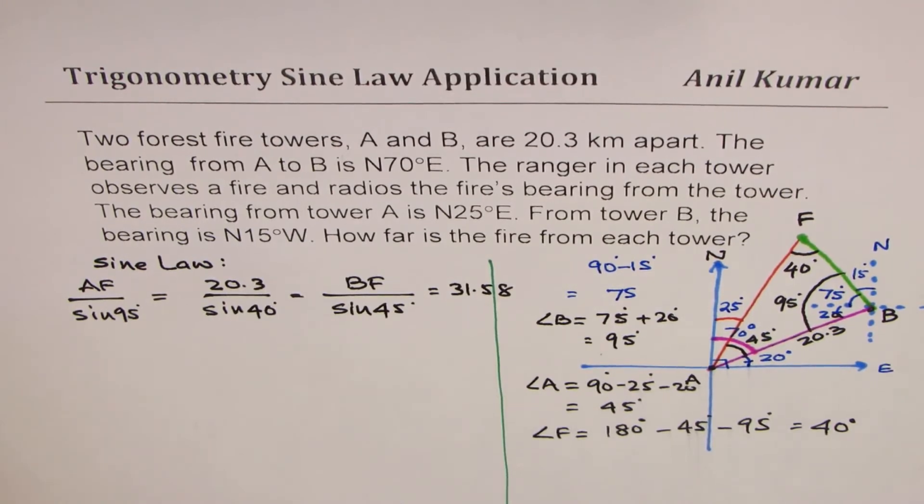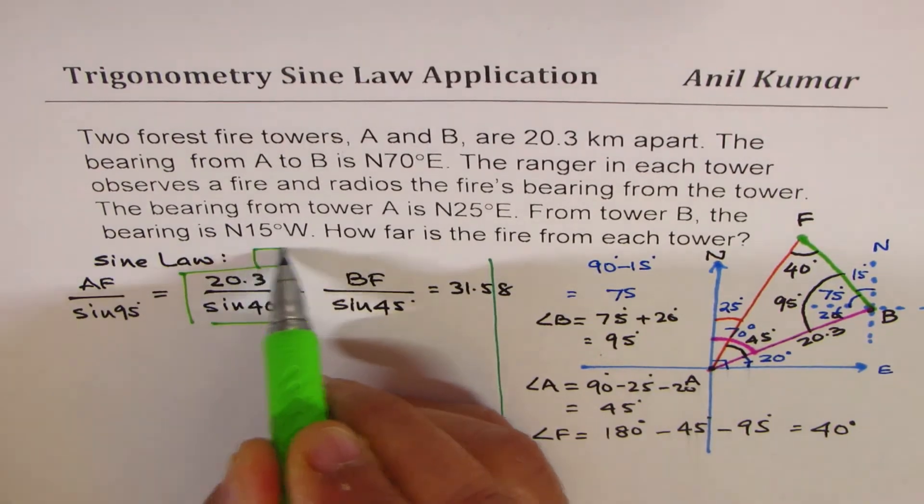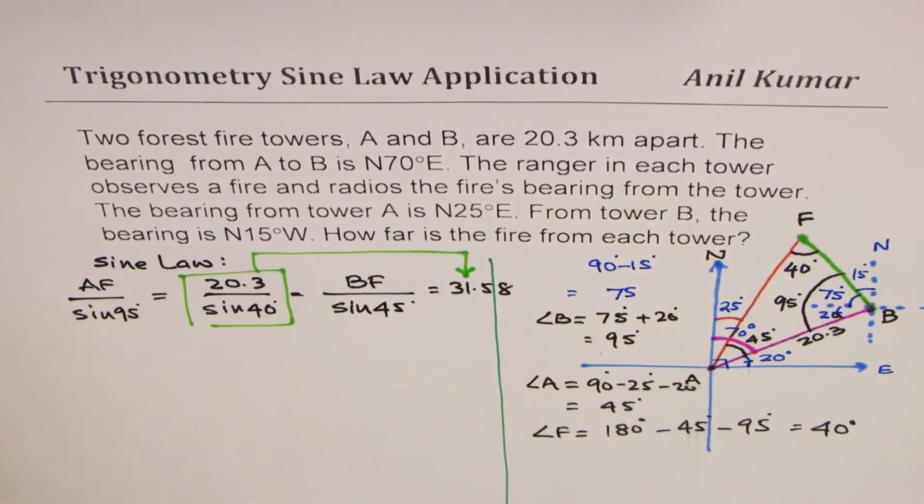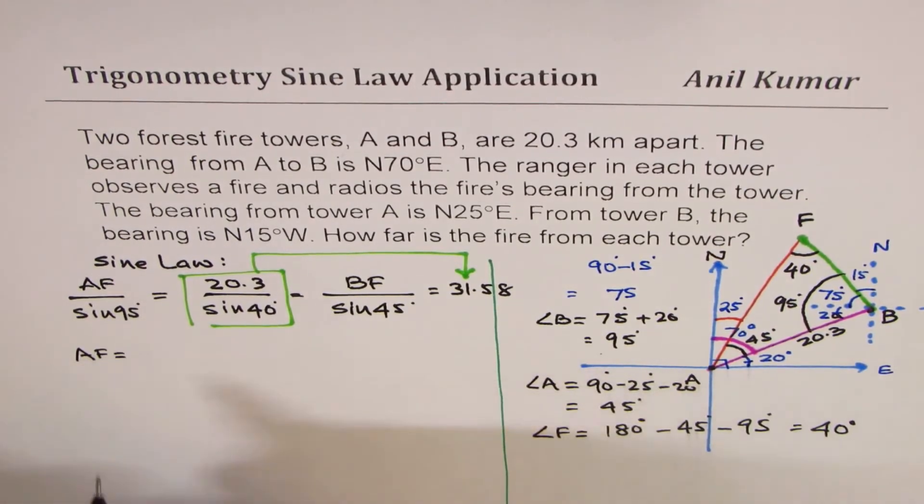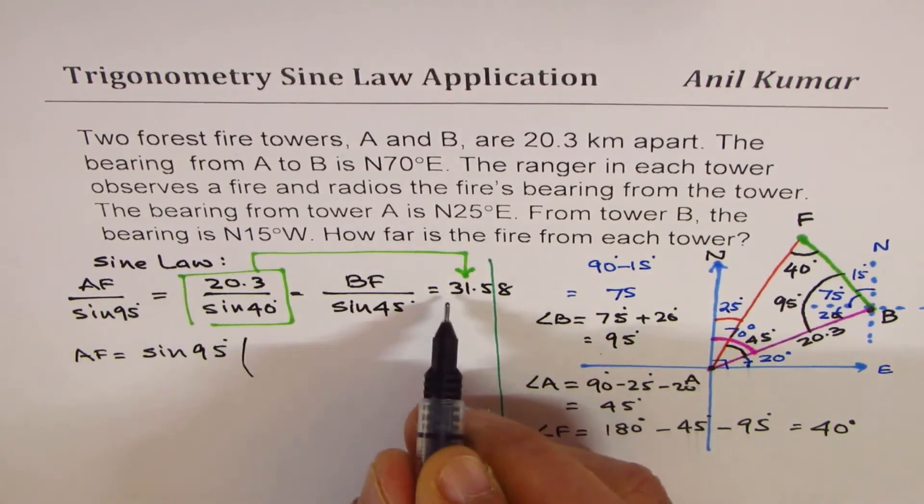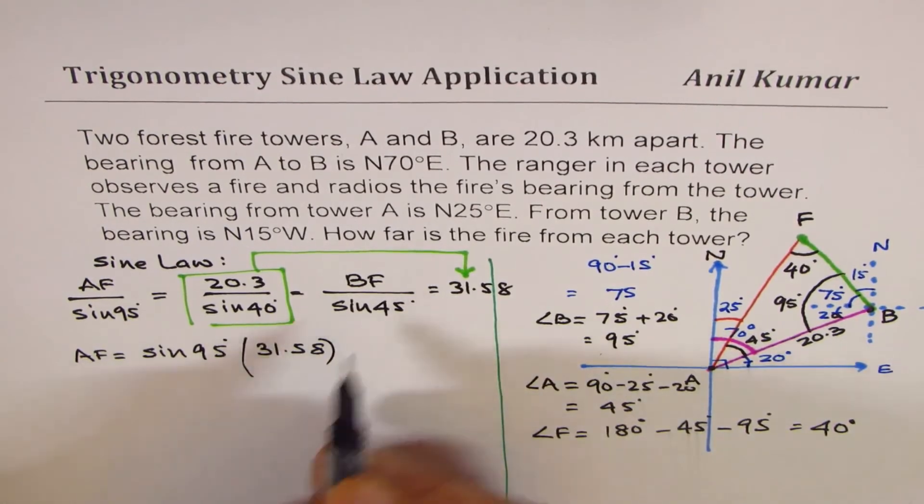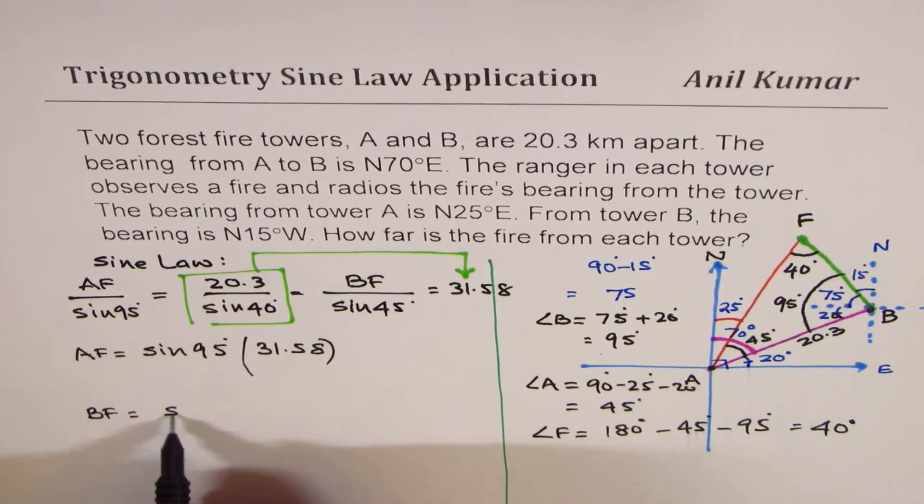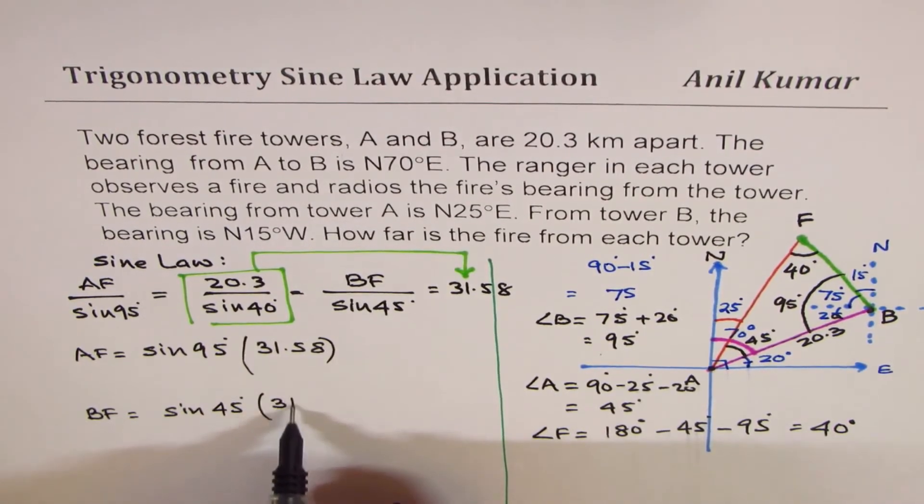So we can find AF and BF with this ratio. So we calculate it. Let me write down here. This ratio as 31.58. So therefore, AF is equal to sine of 95 degrees times the number 31.58.